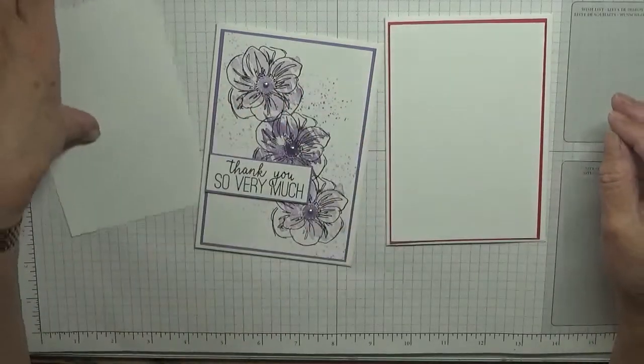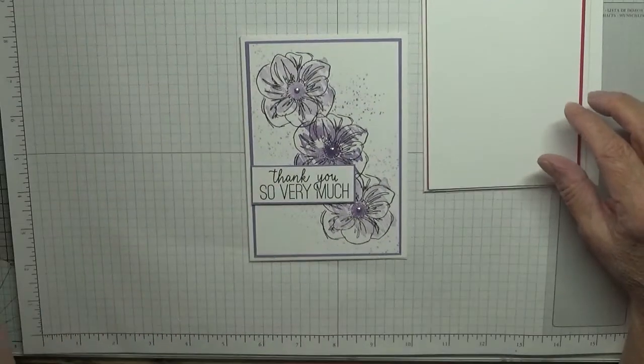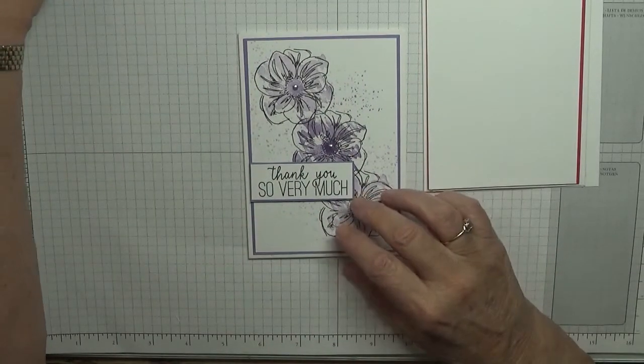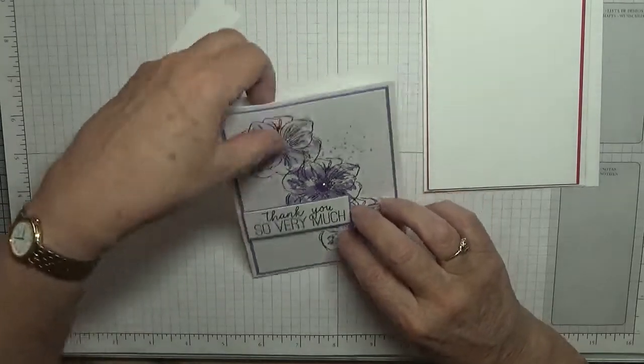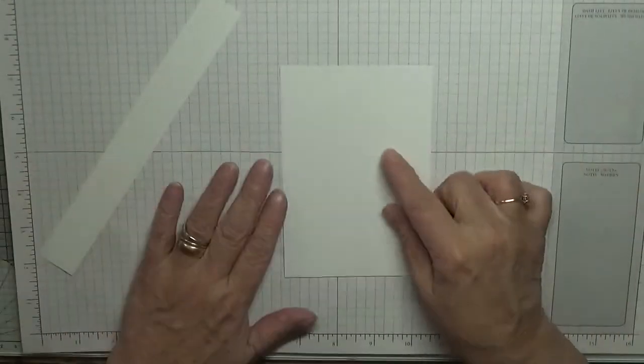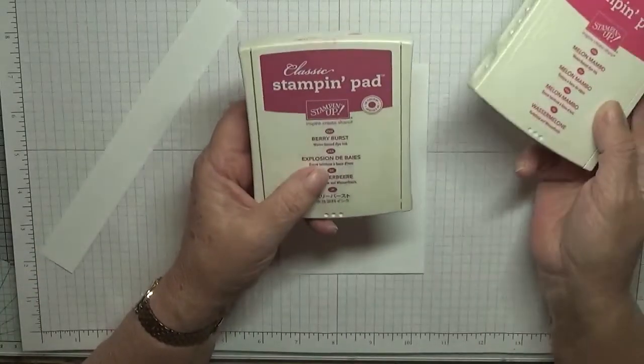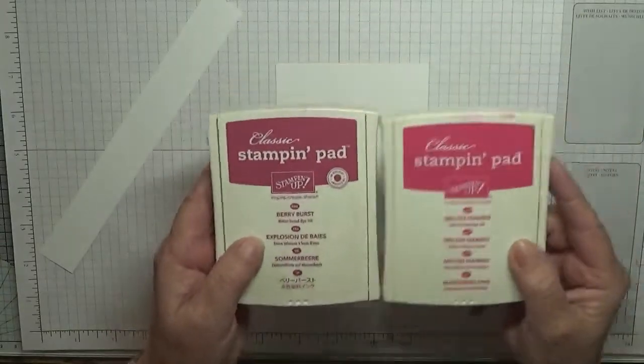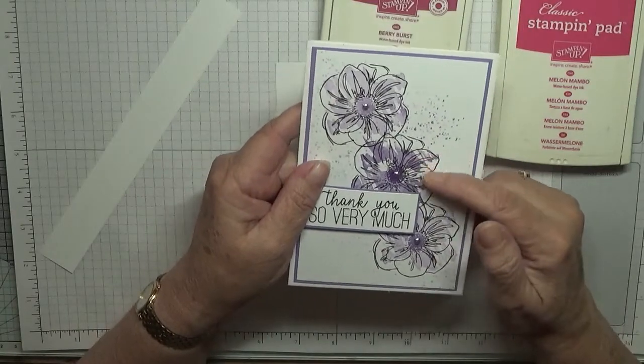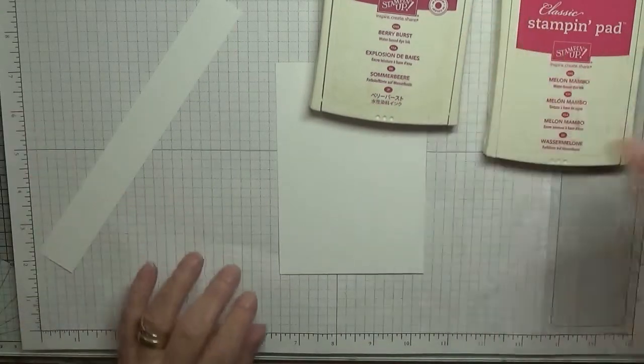I've also got a piece of white for the inside, scrap of white and melon Mambo for the sentiment. To get started we need to stamp on the scrap and on this white piece. I'm using inks melon Mambo and retired berry burst. I thought they went well together. On this one I used Highland Heather and gorgeous grape, so today I'm going to use these two. I haven't used this berry burst for ages.